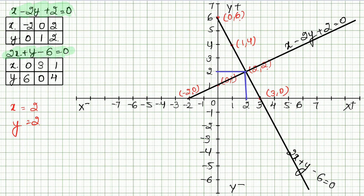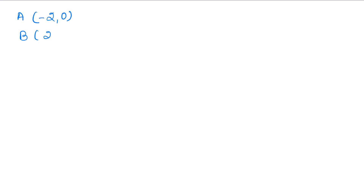Now we need the area of the triangle and its vertices. The triangle is formed by the two lines and the x-axis. We identify 3 vertices: vertex A is at (minus 2, 0), vertex B is at (2, 2) — the intersection point — and vertex C is at (3, 0). So the three vertices of the triangle are A = (−2, 0), B = (2, 2), and C = (3, 0).